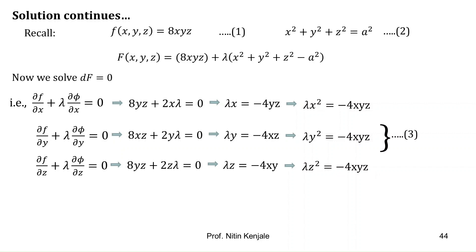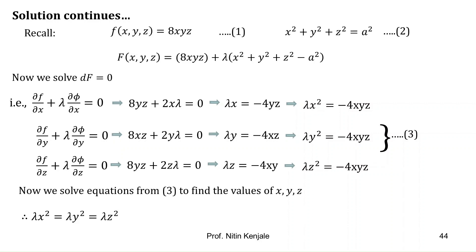Observe equation (3): in all three equations the right-hand side is the same, so the left-hand sides must also be equal. Therefore λx² = λy² = λz². Cancelling λ gives x² = y² = z². Since x, y, and z represent lengths they cannot be negative, so we conclude x = y = z.